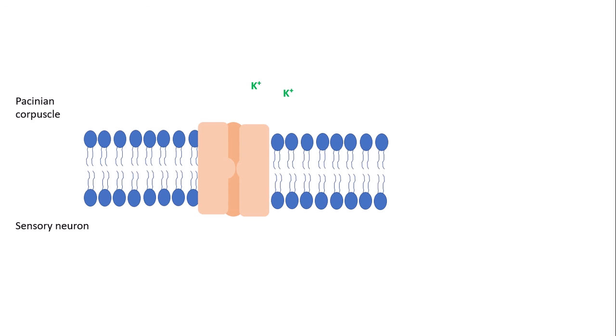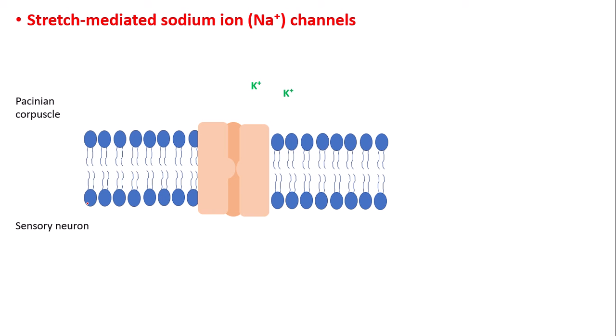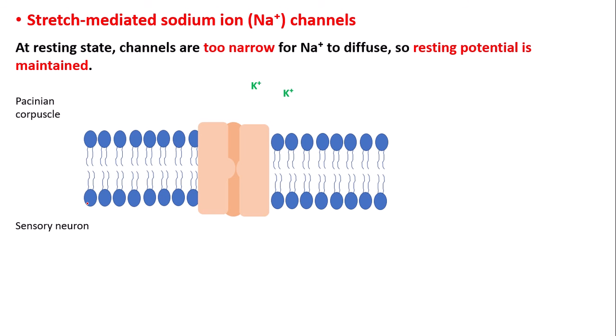Here is the structure of a cell membrane within a Pacinian corpuscle. We have the space in the Pacinian corpuscle, the membrane, and then the sensory neuron that is surrounded by the Pacinian corpuscle. Within these membranes, we have what we call stretch-mediated sodium ion channels. At resting state — when the nerve isn't stimulated and there is no stimulus — the channel proteins are too narrow for Na+ to diffuse through to the sensory neuron, so a resting potential is maintained.